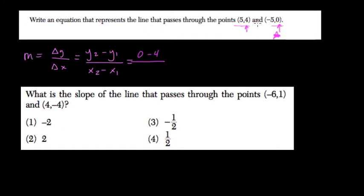0 minus 4 is negative 4, negative 5 minus 5 is negative 10. That reduces to a positive value, 2 fifths.